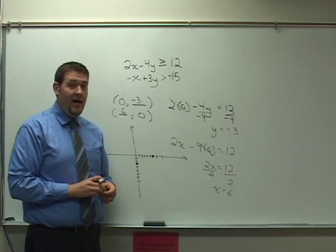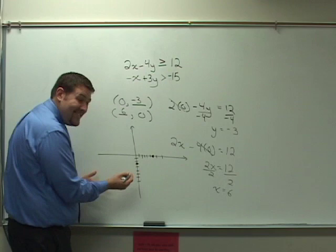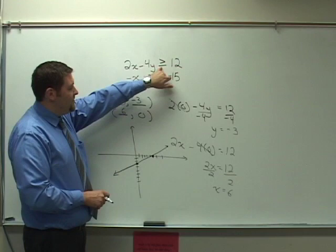Now before I draw the line, I want to make sure I'm using the correct line, whether it's dotted or solid. You'll know there's a line underneath the inequality symbol. This is going to imply that we need a solid line. So I'll connect these using a solid line. Now this is a sketch, so it doesn't have to be perfectly straight. I'll try my best. Okay? So there's my solid line.